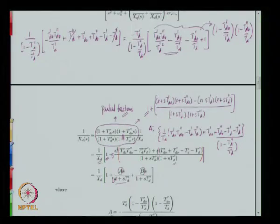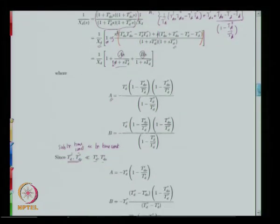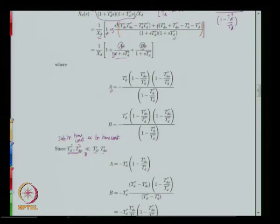The transient time constants T'do and T'd can be derived by neglecting the damper resistance rkd and leakage inductance llkd. We will see justification for this as we proceed. This second-order expression for 1/xd(s) was then simplified by converting it into a form: 1 plus a first-order numerator multiplied by s, divided by a first-order denominator, plus another such term. Expressions for coefficients a and b were derived, using the approximation that sub-transient time constants are much smaller than transient time constants.